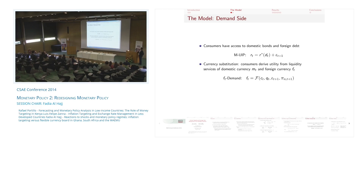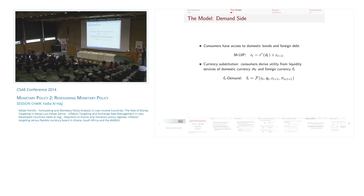Consumers have access to domestic bonds and foreign debt, giving us a modified uncovered interest parity condition that equalizes returns on domestic bonds and the interest rate charged on foreign debt, with a premium capturing different degrees of capital account openness. An important feature of the model is currency substitution: consumers derive utility from liquidity services of both domestic and foreign currency, which allows us to derive a foreign currency demand function that depends on expected depreciation and expected non-traded goods inflation.